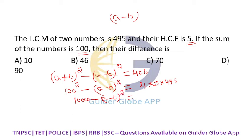equals 4 times 5, which is 20, times 495, which is 9,900.